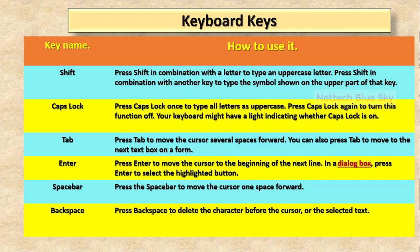Tab button — what is the Tab button? You can see it on your keyboard. Press Tab to move the cursor several spaces forward — that means eight spaces per one tab. You can also press Tab to move to the next text box on a form, such as in Microsoft software when you want to go to the next box.